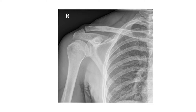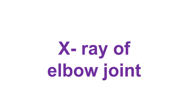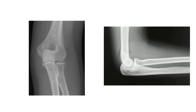From this x-ray we ask these questions repeatedly. Now, the x-ray of the elbow joint. This is the x-ray of the elbow joint AP view, and this is the x-ray of the elbow joint lateral view.